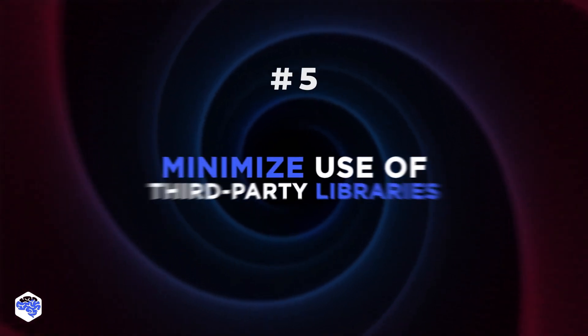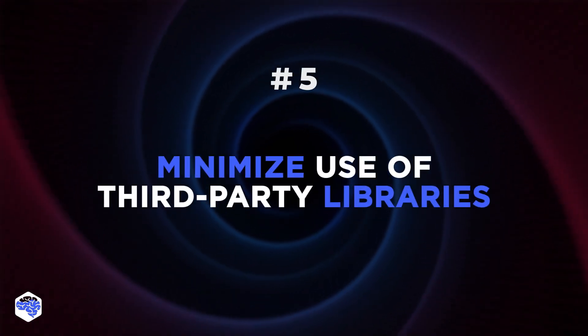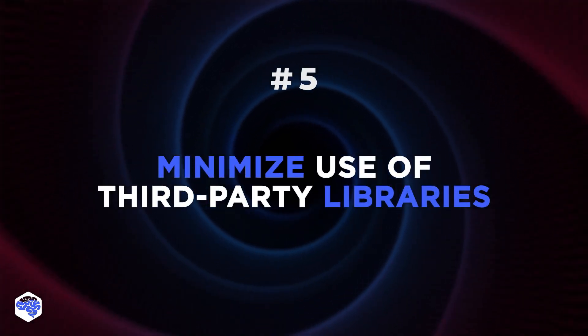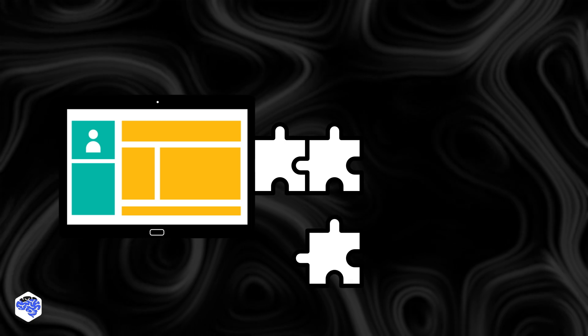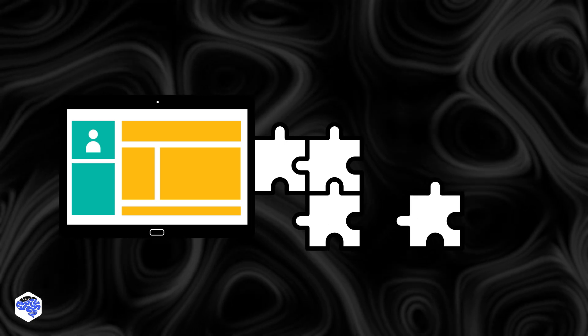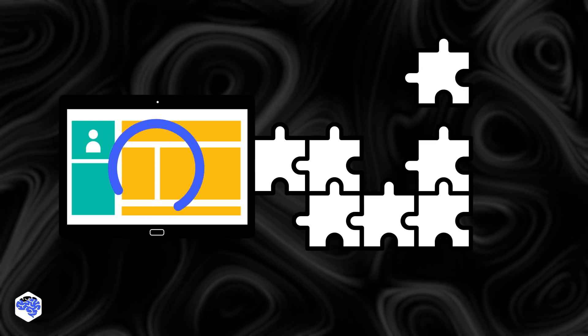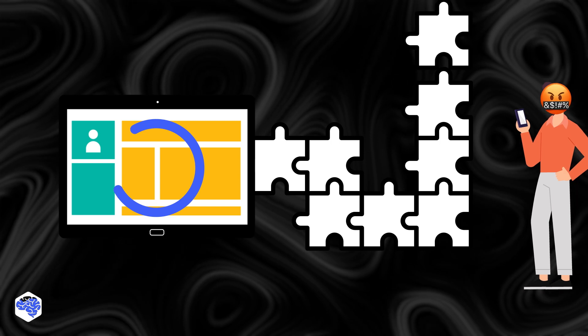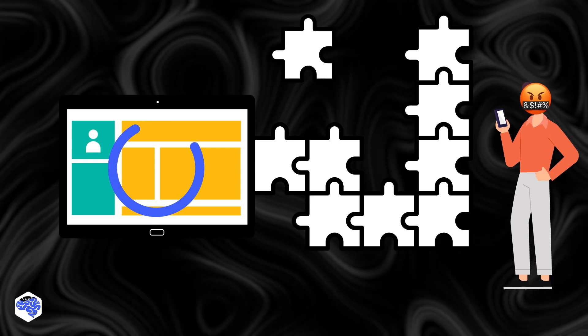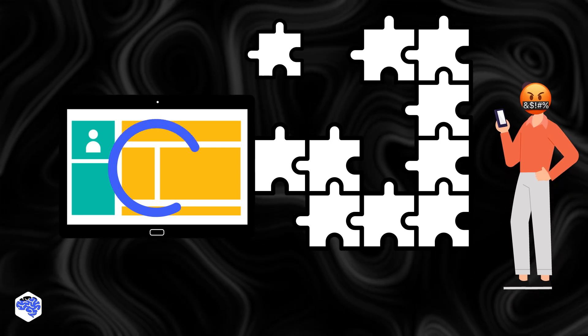Another tip is to minimize the use of third-party libraries. While third-party libraries can save you time and effort, they can also slow down your app if they're not optimized for performance. So only use the libraries that you really need, and make sure they're well-maintained and up-to-date.